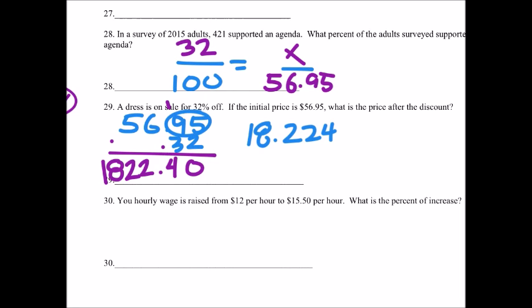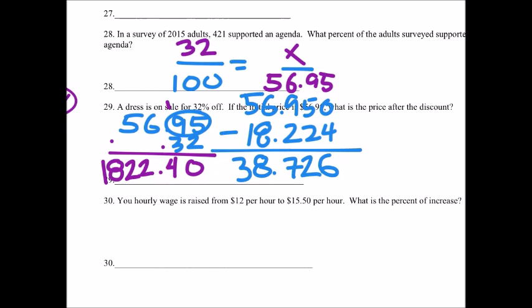We have the original price $56.95, and we're going to subtract that $18.22 because that's the 32% off. That's 56.95 minus 18.224, which equals 38.73.